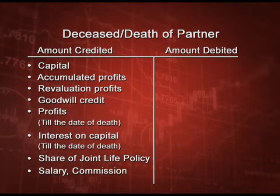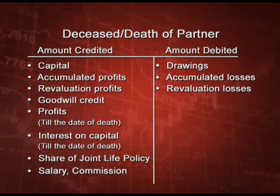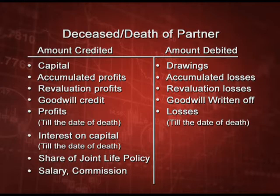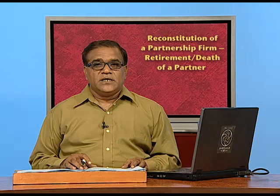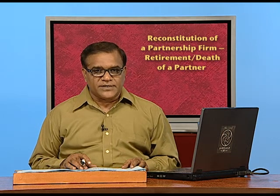The amounts to be debited to the partner are: drawings, accumulated losses, revaluation losses, goodwill written off — if existing goodwill is there it has to be written off — losses till the date of death, and interest on drawings.